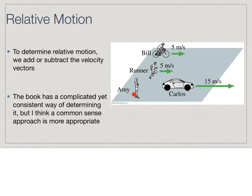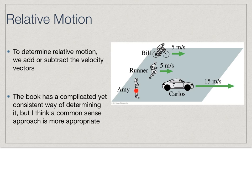We have a situation: Amy is standing still, a runner is going at 5 meters per second, Bill is going at 5 meters per second, and Carlos is going at 15 meters per second. Both Bill and the runner are going in the same direction. How fast is Bill going? That's an incomplete question. The real question should be: relative to what? If I ask how fast is Bill going relative to Amy, I pretend Amy's not going anywhere. Bill is going 5 meters per second to the right faster than Amy, which is essentially zero.